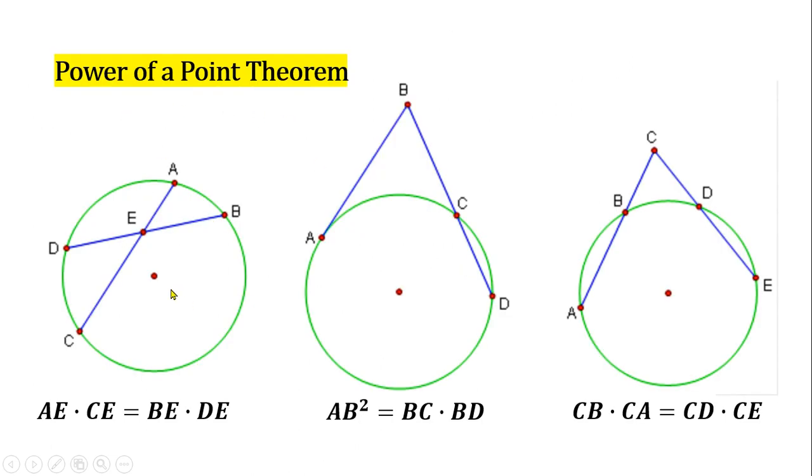There are actually three cases indicated in the theorem. The first case involves two intersecting chords. Suppose the chords are AC and BE intersecting at point E. From this case, we can derive the equation AE times CE equals BE times DE.